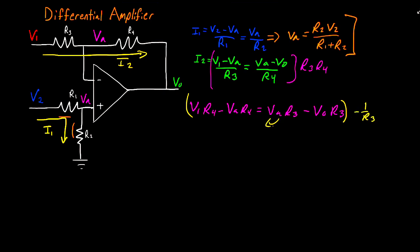And I'll also move this to the other side and factor out VA. Negative V1 R4 divided by R3 plus VA times R4 plus R3 divided by R3 is equal to VO. Now we're a lot closer.